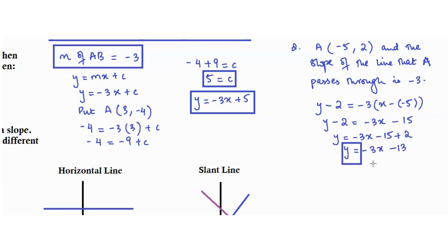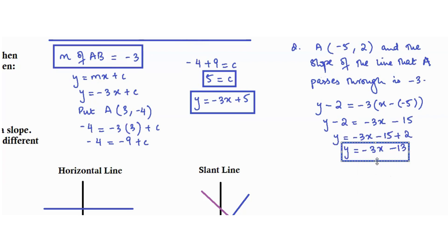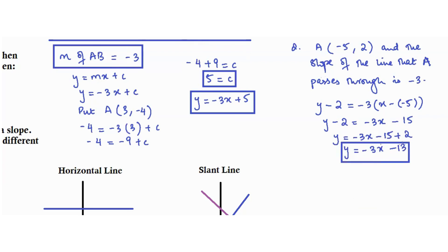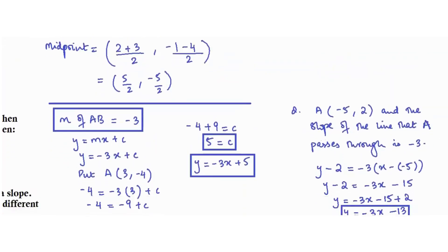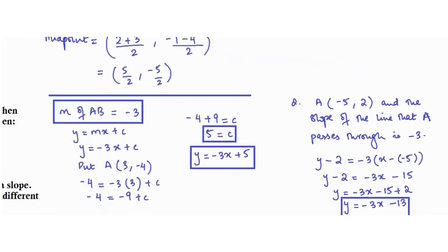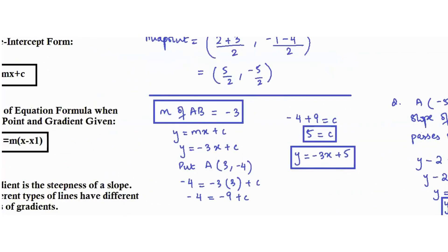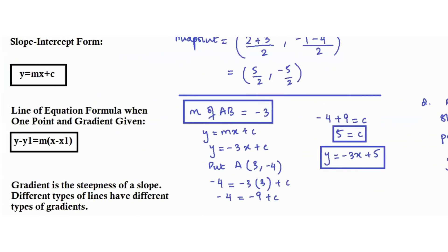So y equals negative 3x minus 15 plus 2, and y equals negative 3x minus 13. That is your line equation when you have a point and slope given. When you have two points, you can directly use y equals mx plus c, the slope-intercept form.